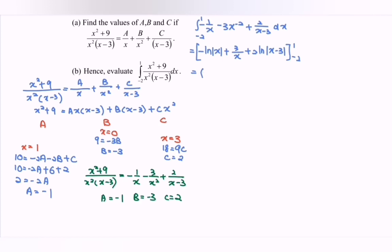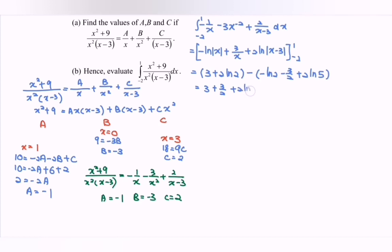Substitute 1: negative ln 1, which gives 0, plus 3, plus 2 ln 2. Minus the result from substituting negative 2: we will have negative ln 2, then negative 3 over 2, then plus 2 ln 5. Rewriting: we have 3 plus 3 over 2, plus 2 ln 2, plus ln 2, minus 2 ln 5.